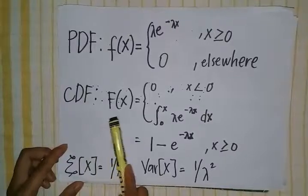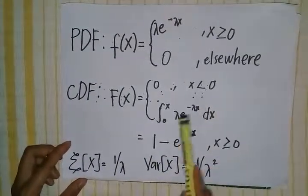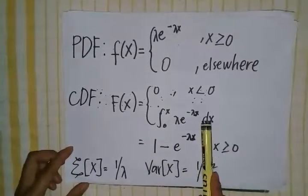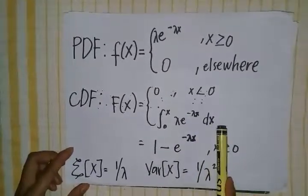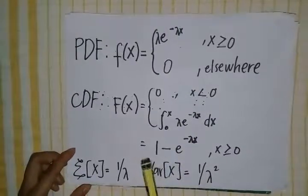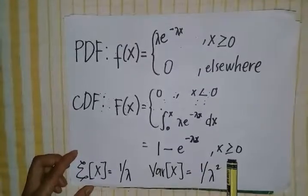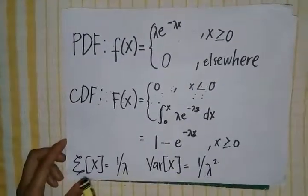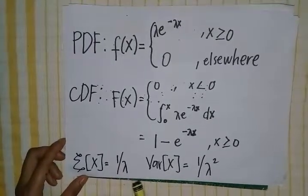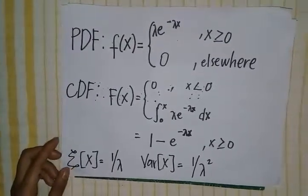The CDF is F(x) = 0 for x < 0, and the integral of λe^(−λx) dx evaluated from 0 to x equals 1 − e^(−λx) for x ≥ 0. The exponential distribution's mean is 1/λ and its variance is 1/λ².